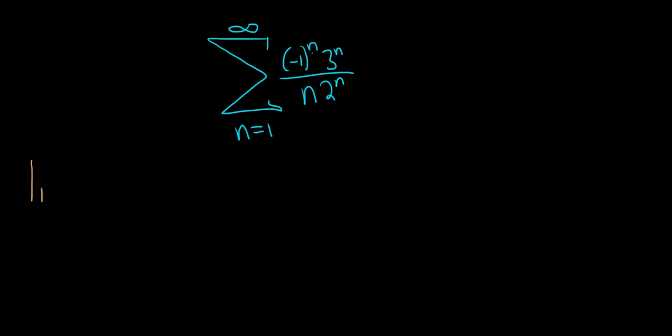So the ratio test says that you take the limit as n approaches infinity of the absolute value of a sub n plus 1 over a sub n. If the result is less than 1, we have convergence. If it's greater than 1, we have divergence. And if it's equal to 1, there is no information.